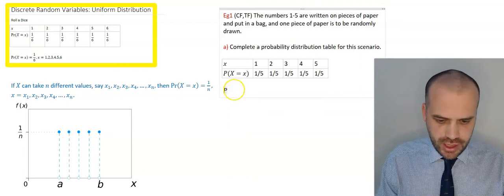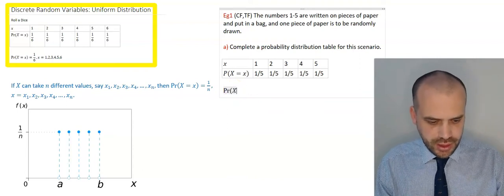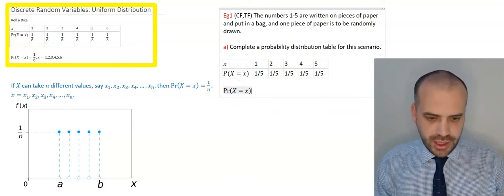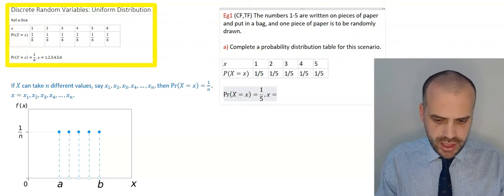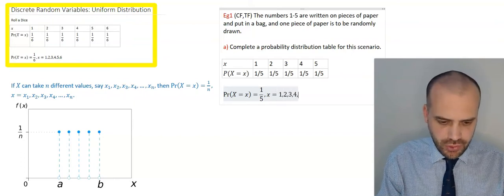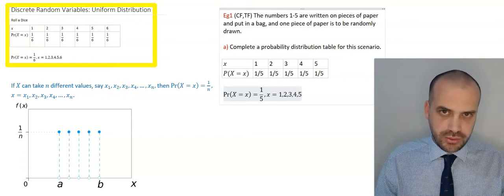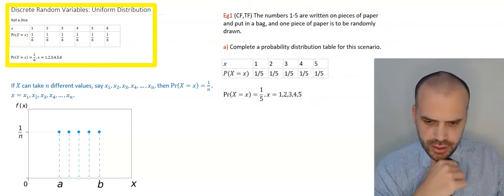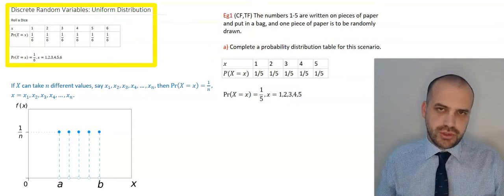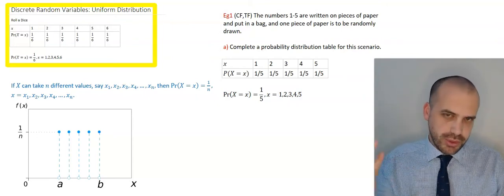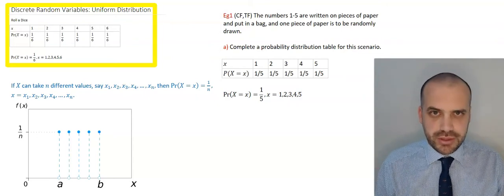We can write that as an equation: the probability that the random variable x is equal to x is equal to 1 in 5, where x equals the values 1, 2, 3, 4, and 5. So those are discrete random variables and uniform distributions. We'll talk about other distributions in future videos.